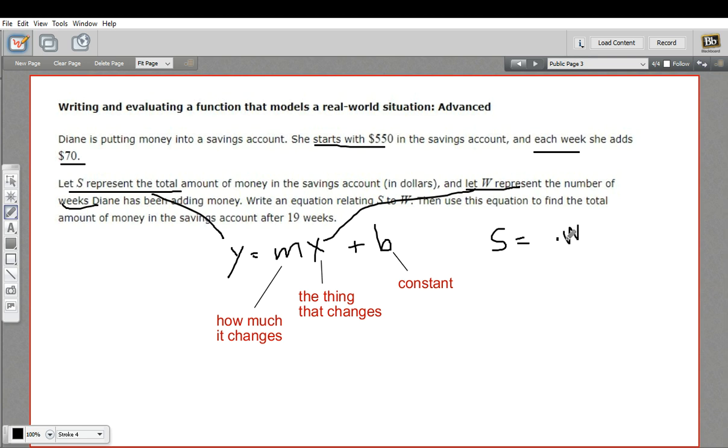Then we're going to have some multiplier on w and some constant. Well, the other numbers we have here are $70 and $550. The $550, that's going to be our constant because that was put into the bank account at the beginning and that number doesn't really change. It was always there.